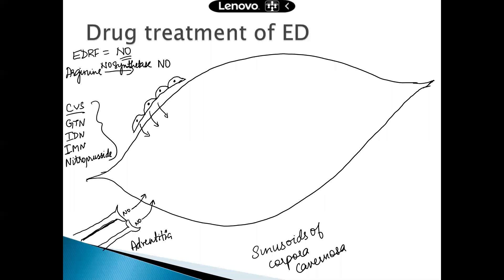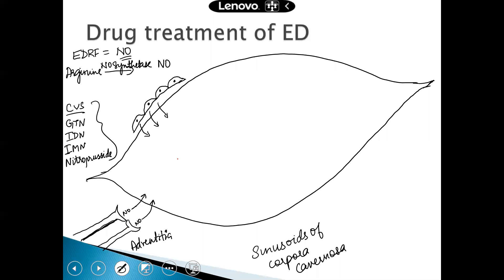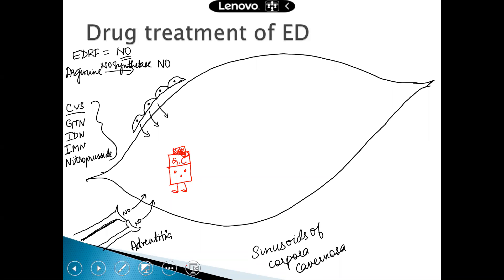Now in this specific smooth muscle there is a compound called guanylyl cyclase. This guanylyl cyclase is present in your smooth muscle — its name is guanylyl cyclase, and it's wearing a cap. Guanylyl cyclase has a point of attachment for nitric oxide. Nitric oxide, when released by the endothelium and the nerve terminals present in the adventitia, goes and binds to the guanylyl cyclase.